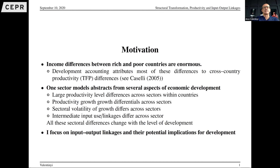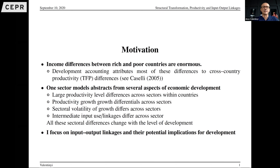Most of this result, until recently, was based on one-sector models which abstracted from several aspects of economic development. Some of those aspects include large productivity level differences across sectors within countries — the agricultural productivity gap is one manifestation. There are also productivity growth differentials across sectors, output growth volatility differences, and differences in the intensity of intermediate input use. There is significant evidence that these sectoral differences change with the level of development.